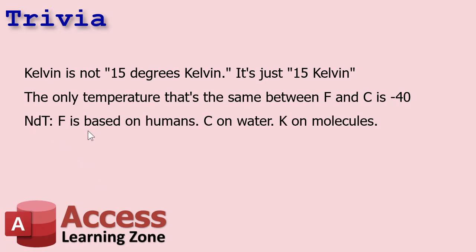I believe it's Neil deGrasse Tyson who said: Fahrenheit is a scale based on humans — zero is pretty cold for a human and a hundred is pretty hot. Celsius is based on water — it freezes at zero and boils at 100. And Kelvin is based on molecules, where absolute zero means no molecular motion. I thought that was pretty cool.